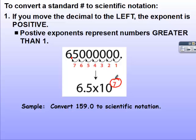In our sample problem, we want the decimal between the 1 and the 5. Again, it's always going to be behind the first number. So that's going to be 1.59 times 10 to the 1, 2 place.